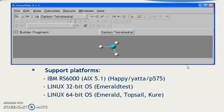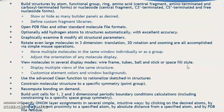GaussView supports structure building by atom, functional groups, rings, amino acids (central fragment, amino-terminated, and carboxyl-terminated forms), or nucleosides (central fragment, C3-terminated, C5-terminated, and free nucleoside form). You can show or hide builder panels, define custom fragment libraries, and open PDB files and other standard molecule file formats. Optionally add hydrogen atoms automatically with excellent accuracy. Graphically examine and modify all structure parameters — rotate large molecules in 3D. Translation, 3D rotation, and zooming are all accomplished via simple mouse operations.